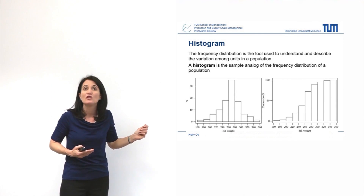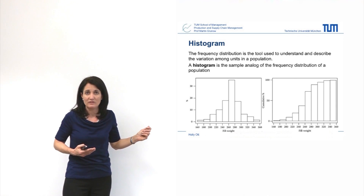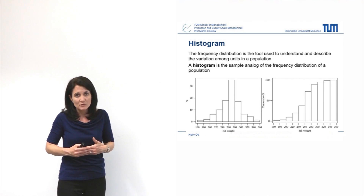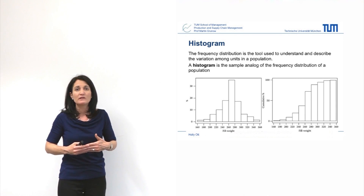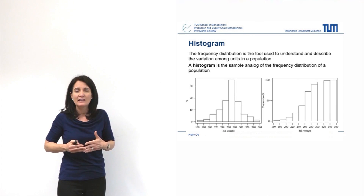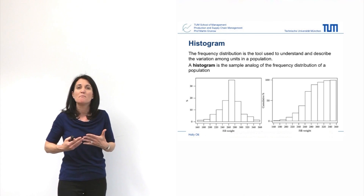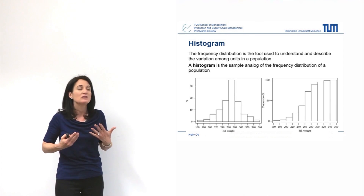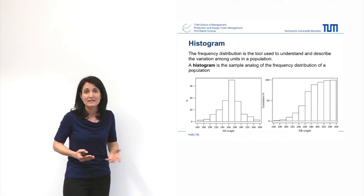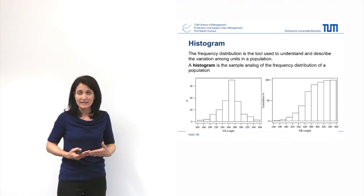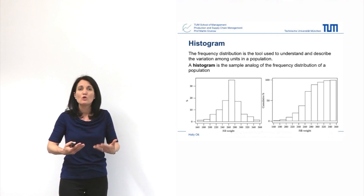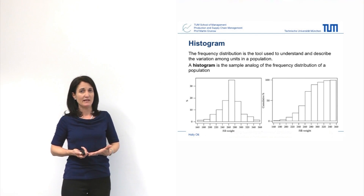You can also have a cumulative graph, which means that you're starting with the lowest possible value or the lowest possible range, and you are then accumulating the points up until the maximum point. These two types of graphs are used very extensively in data analysis and data presentation to show the data that you've collected.